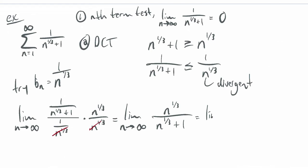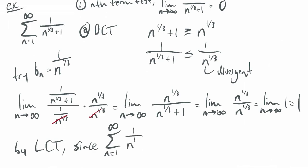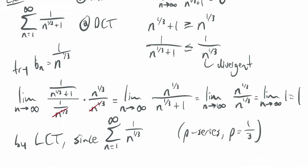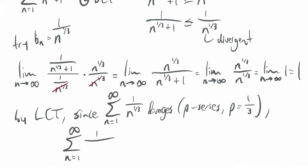The limit as n goes to infinity of a_n over b_n: (1/n to the 1/3) divided by (1 over n to the 1/3 plus 1). Multiplying bottom by n to the 1/3 gives the limit of n to the 1/3 over n to the 1/3 plus 1. That plus 1 doesn't matter, so this equals the limit of n to the 1/3 over n to the 1/3, which is 1. By the limit comparison test, since the series of 1 over n to the 1/3 diverges (P-series, p equals 1/3, which is less than 1), this series also diverges. There may be another comparison that's easier, but this one works.